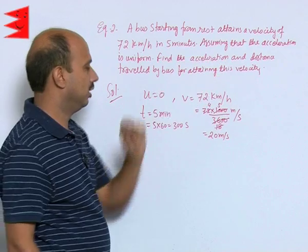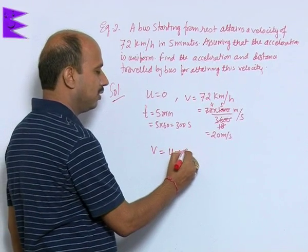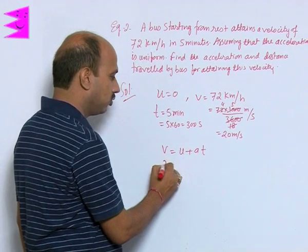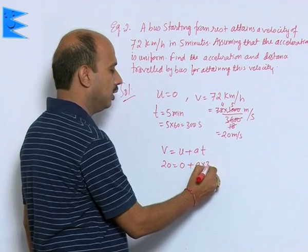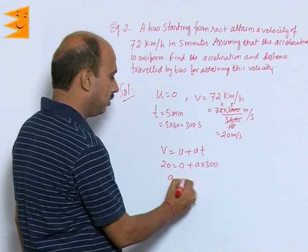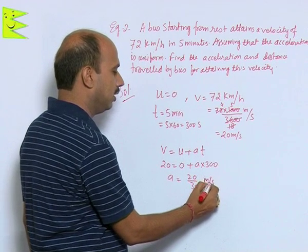Now you have to calculate acceleration. You know first equation was v equals u plus at. Here we get final velocity is 20, initial is 0 plus a into 300. So we can write a equals 20 by 300 meters per second squared.